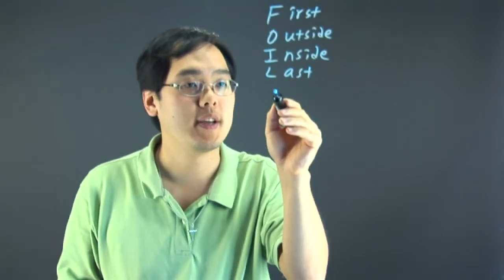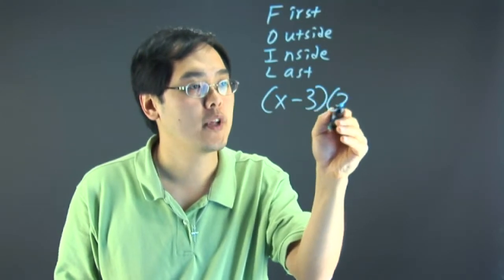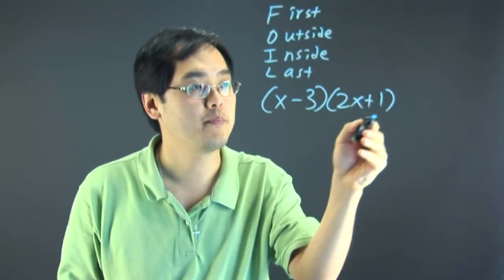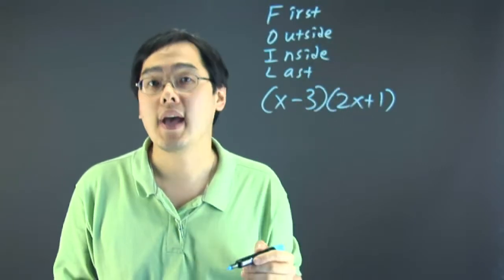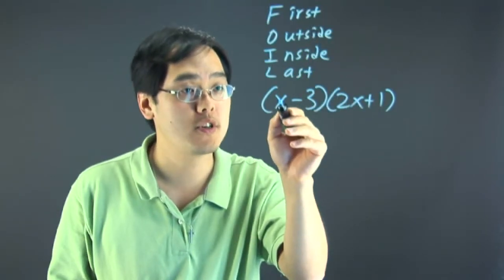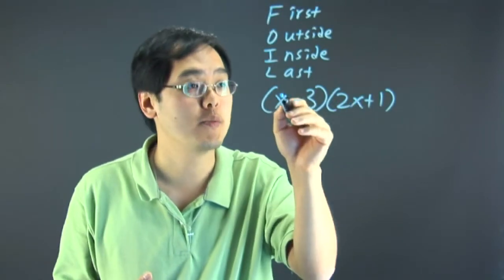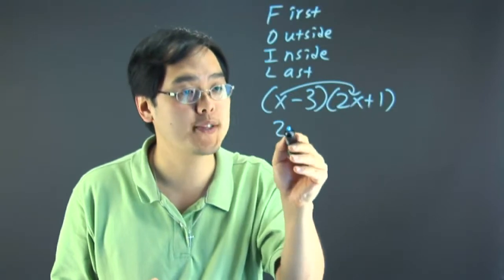So let's talk about that. Suppose you have x minus 3 and you're multiplying that by 2x plus 1. Let's talk about the F first. F says you have to multiply the first terms in each parentheses. So the first term is x, the first term in this second parentheses is 2x. So multiply those first terms, you have 2x squared.